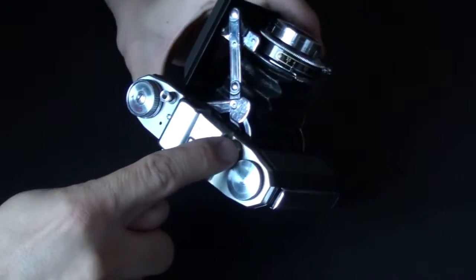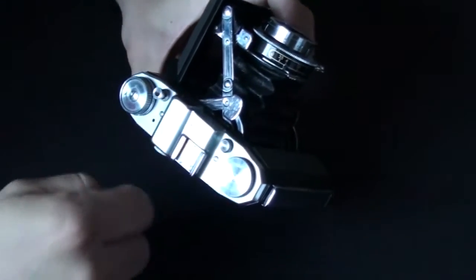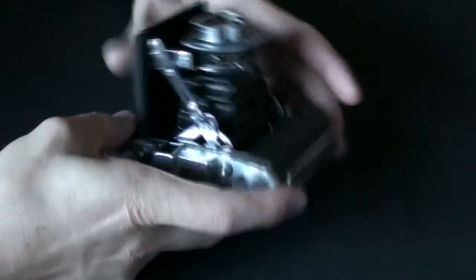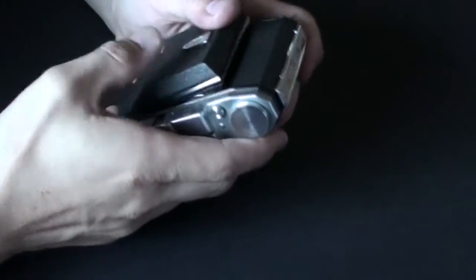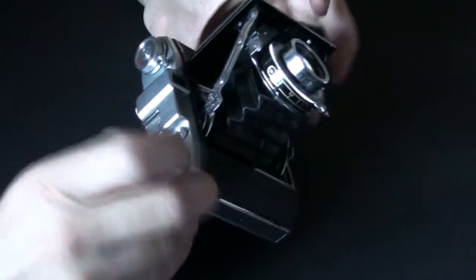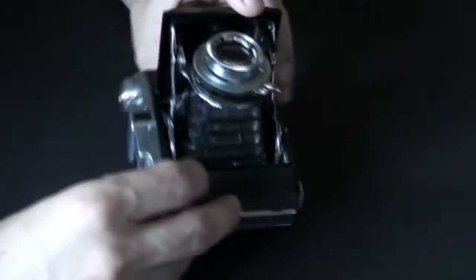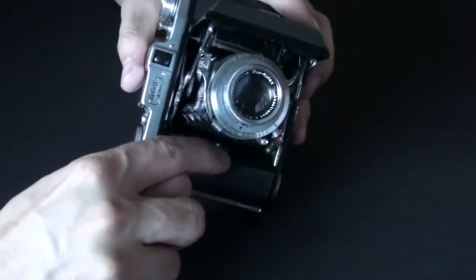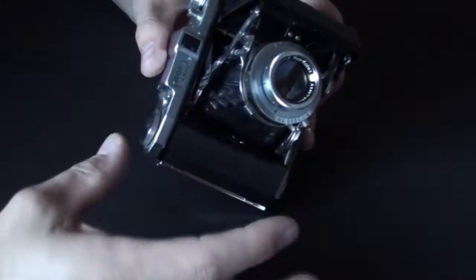Over here, this little knob, this little push button, is actually a release button for the hatch. So if I close the hatch, and I press it, it actually releases a little latch inside there, and it opens up the whole hatch.